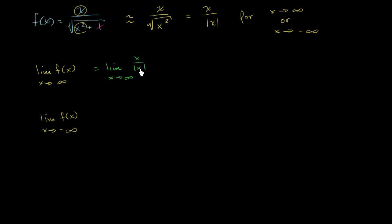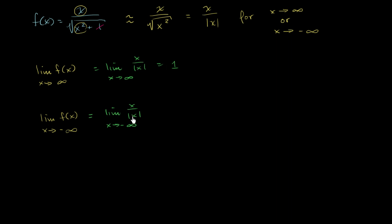For positive x's, the absolute value of x is just x, so x divided by x is just 1. Similarly, taking the limit as x approaches negative infinity, this is the limit of x over the absolute value of x as x approaches negative infinity. The only reason I can make this statement is that f of x and this expression become very, very similar as x gets very large or very negative. For negative values of x, the absolute value of x is positive but x is negative, so we get negative 1.